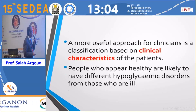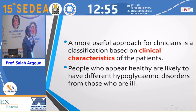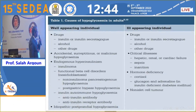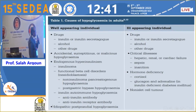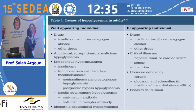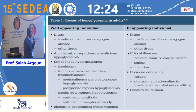The more useful approach for clinicians is a classification based on the clinical characteristics of the patient. People who appear healthy are likely to have different hypoglycemia disorders from those who appear ill. For ill-appearing patients, causes include: drugs such as insulin, insulin secretagogues, and alcohol; critical illness such as end-organ failure — hepatic, renal, or cardiac failure — or sepsis or starvation; hormone deficiency such as cortisol deficiency, glucagon deficiency, or adrenal insufficiency; and non-islet cell tumors.